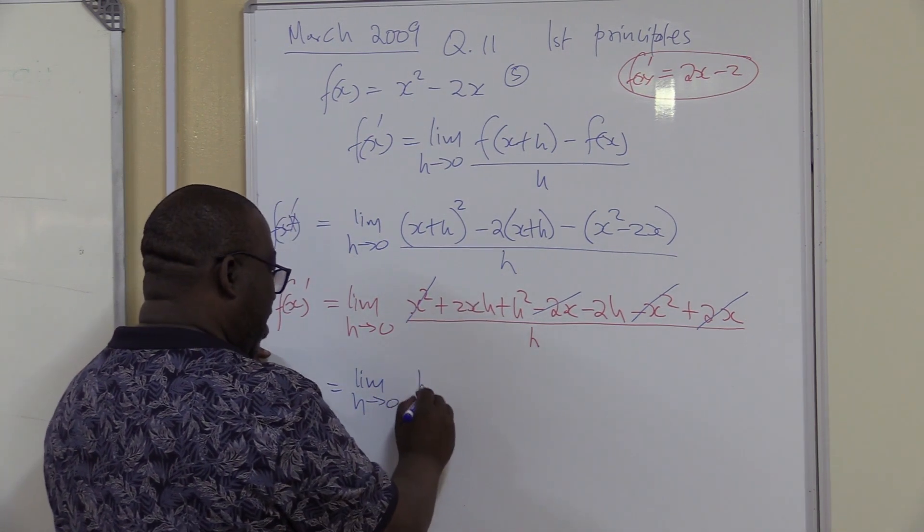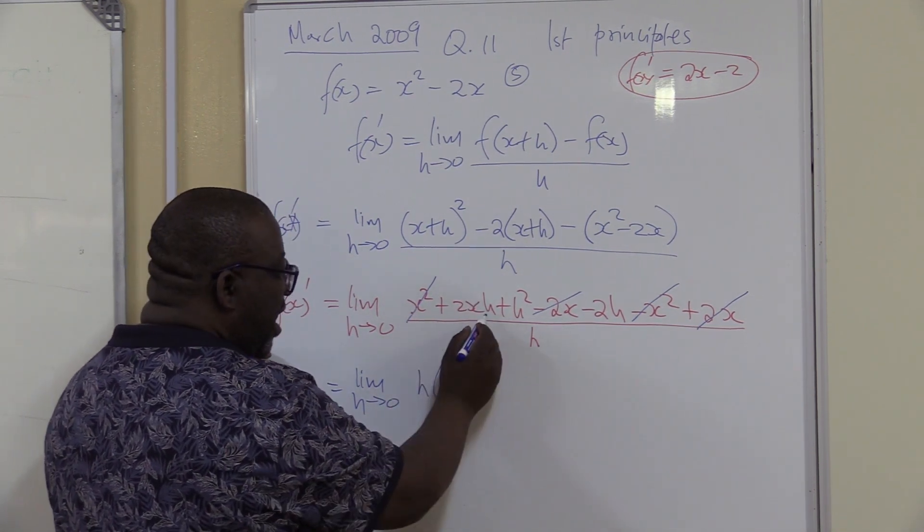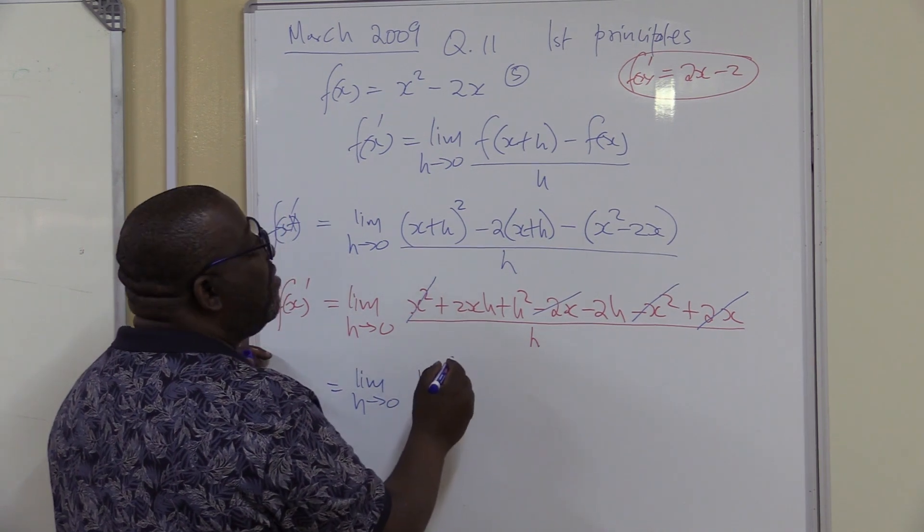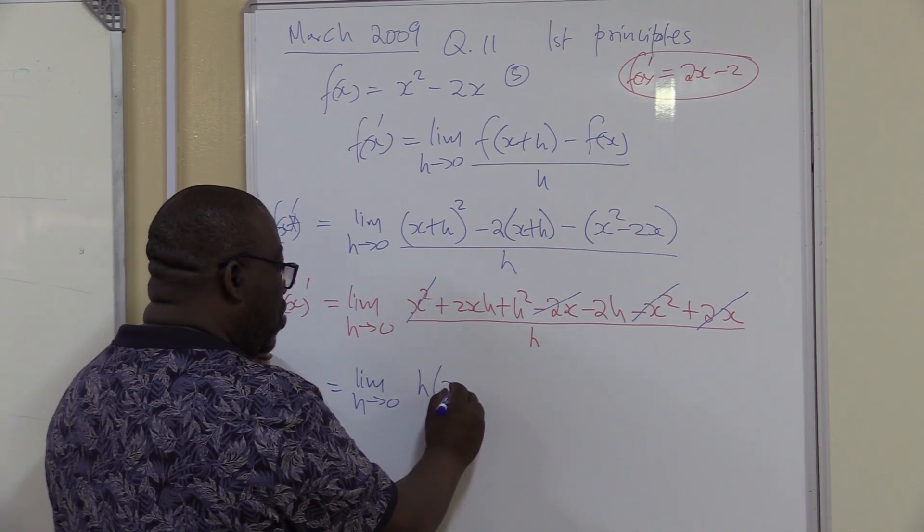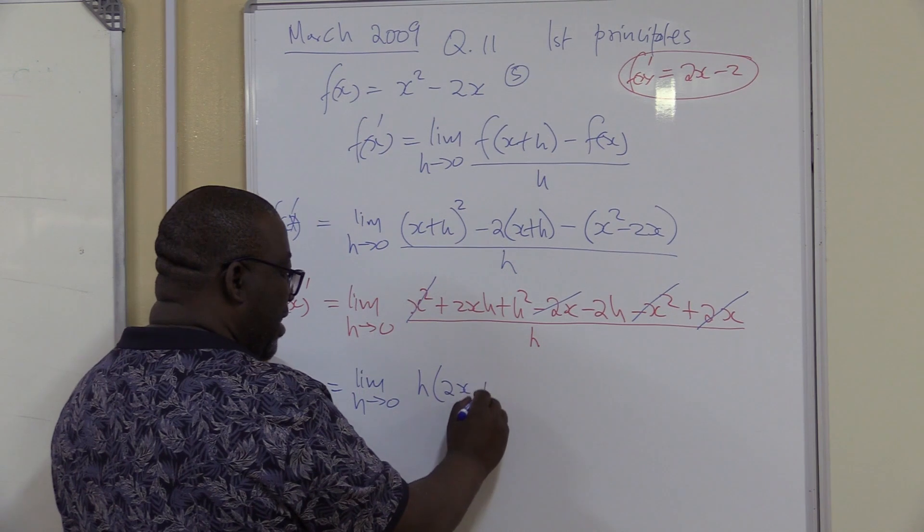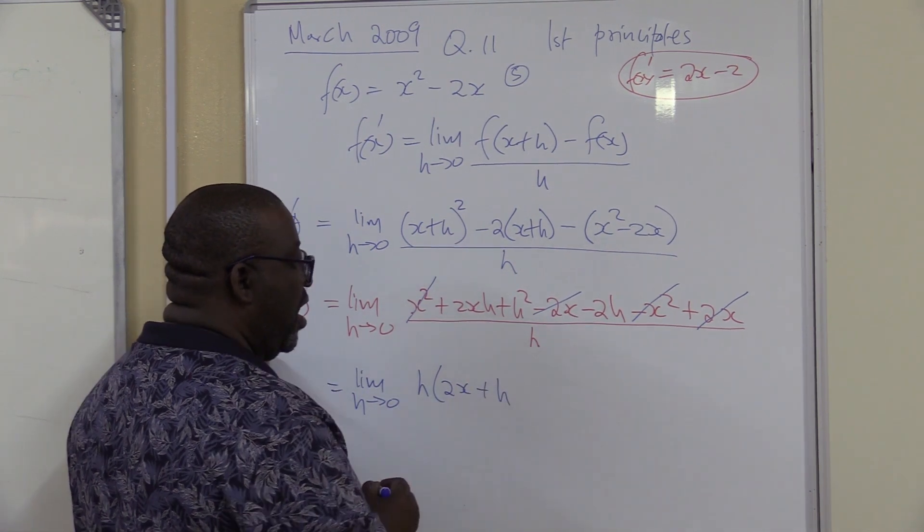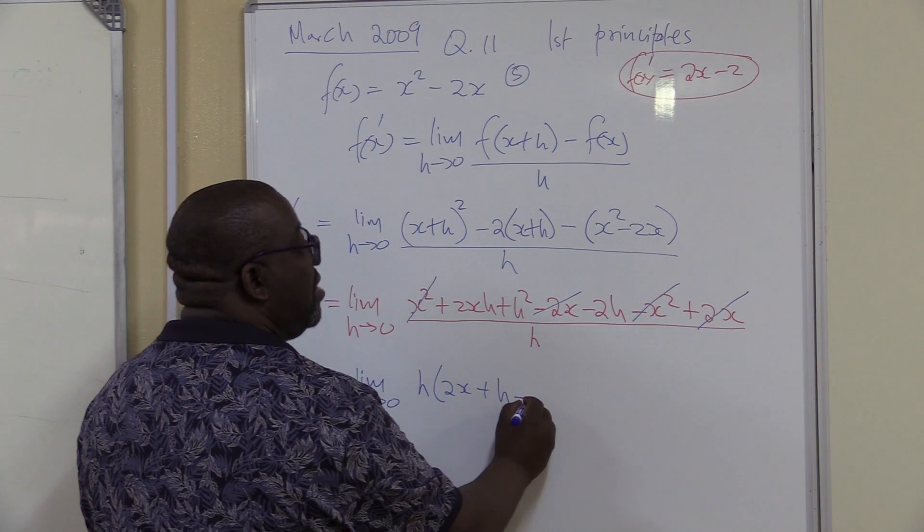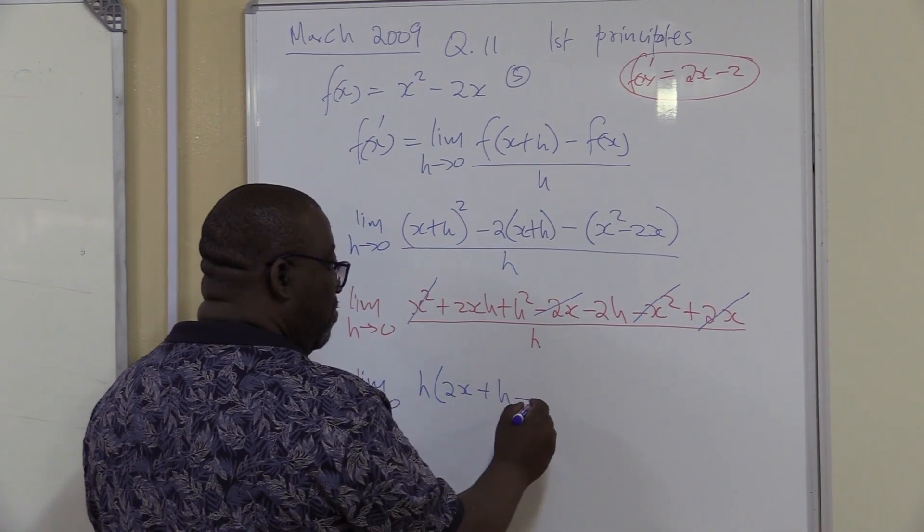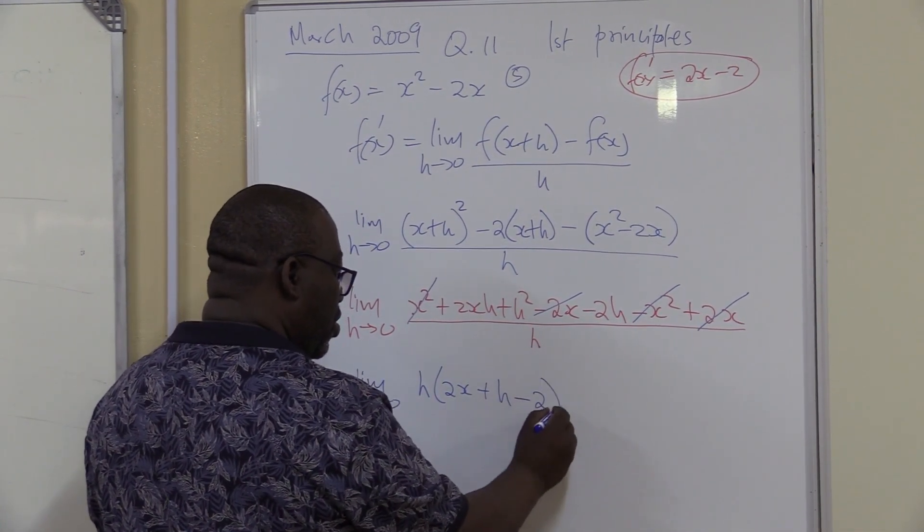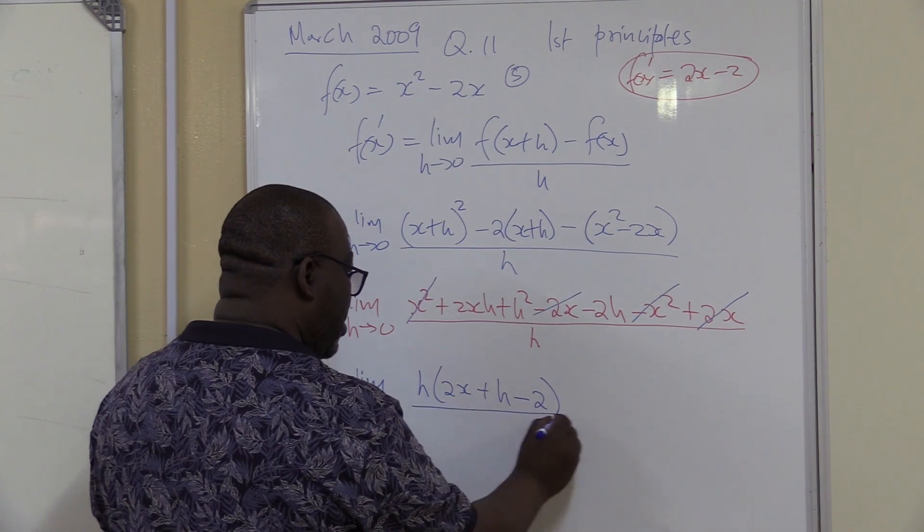Let's take out the common factor of h. If I'm taking out h, what will I be left with? I'll be left with 2x plus, if I'm taking out h there, I'll be left with another h, minus if I take out h there, I'll be left with 2. This is all over h.